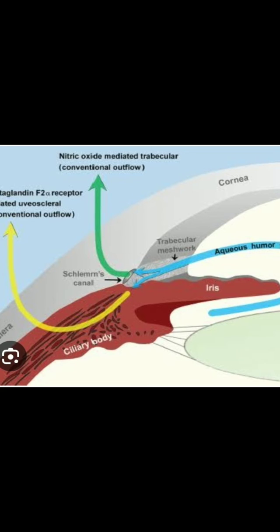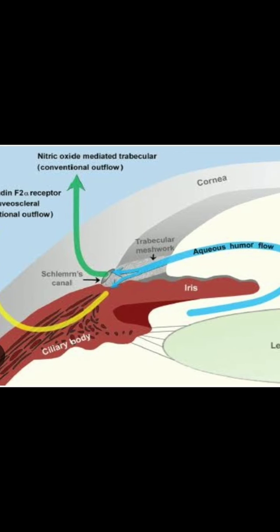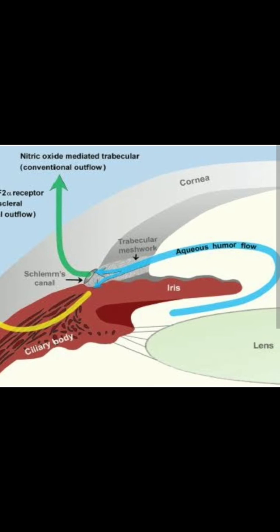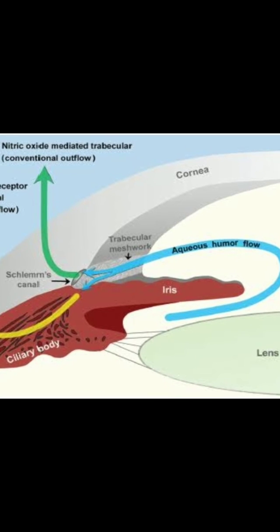It travels between the iris and the lens and passes through the pupil, reaching the anterior chamber. From the posterior chamber, it reaches the anterior chamber between the cornea and the iris, nourishing the lens, iris, and cornea on its way.